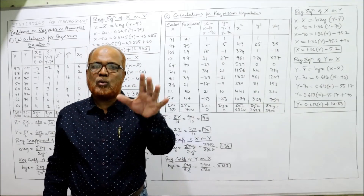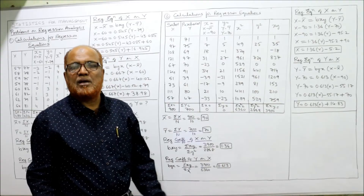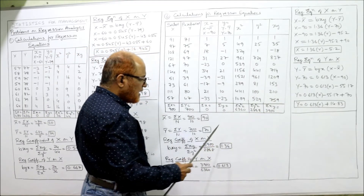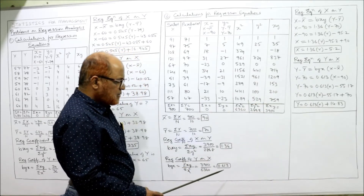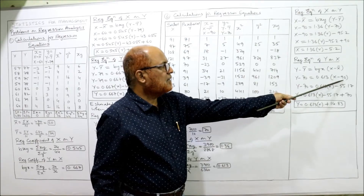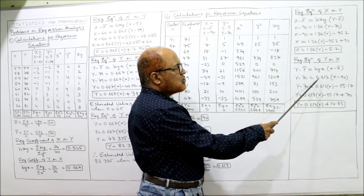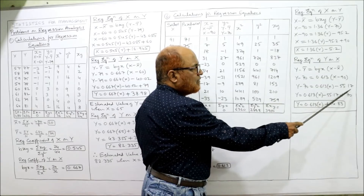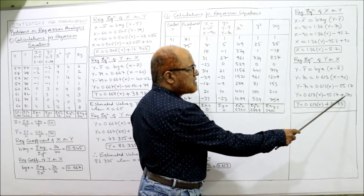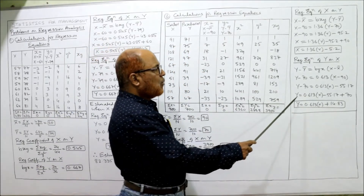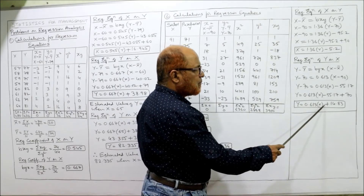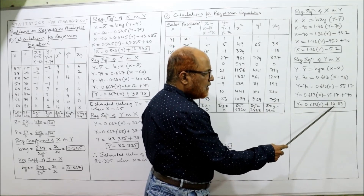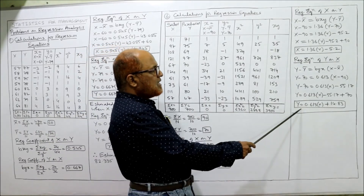For the regression equation of Y on X: Y − Y-bar = BYX × (X − X-bar). Substituting: Y − 70 = 0.613 × (X − 90). Opening the bracket: Y − 70 = 0.613X − 0.613×90 = 0.613X − 55.17. Taking −70 to the right-hand side: Y = 0.613X − 55.17 + 70, giving Y = 0.613X + 14.83. This is the regression equation of Y on X.